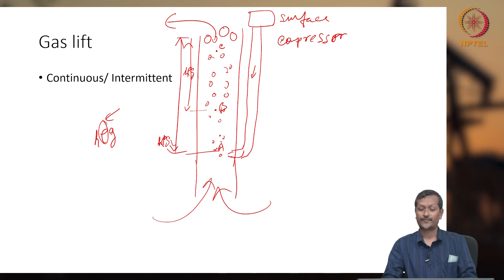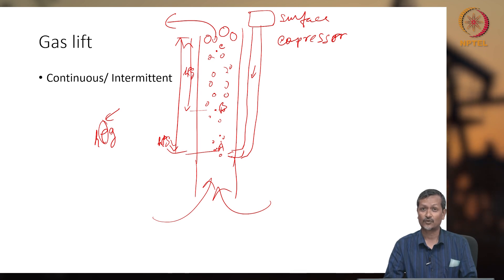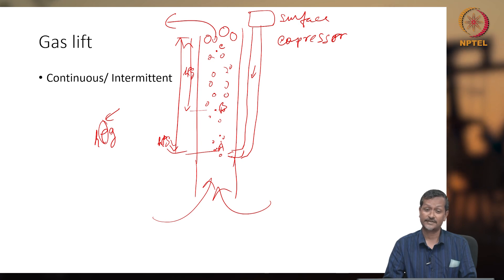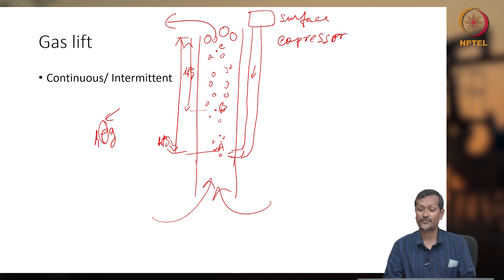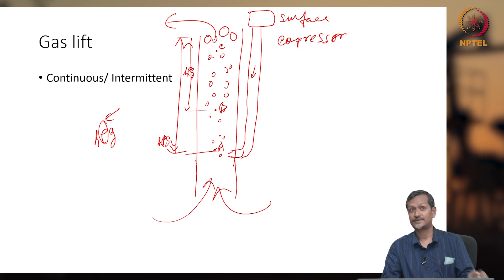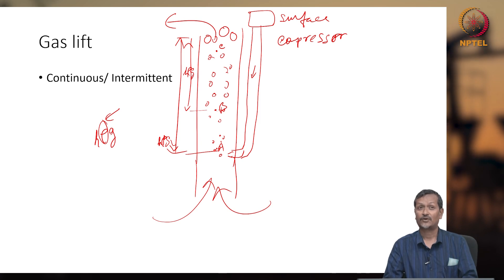The gas injection nozzle location is also very important — which depth you inject and the hydrostatic pressure at that point must all be analyzed before you optimize your wellbore. This will be discussed in detail when we cover the continuous gas lift system.